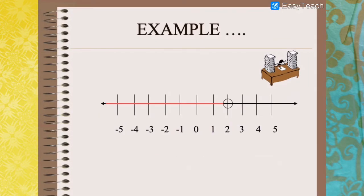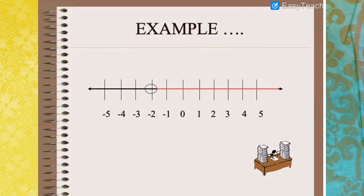With a number line, you can have a range of answers. The possible value of x would be all real numbers less than 2, so you represent it as x less than 2 — the dot is at 2 and the arrow goes towards the left. Another example: this shows the solution should be all real numbers greater than negative 2, so x is greater than negative 2, with the arrow towards the right.